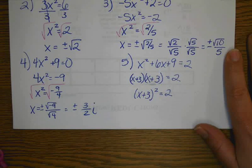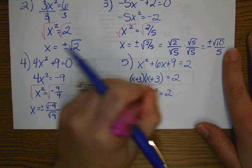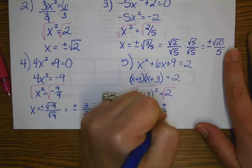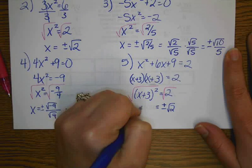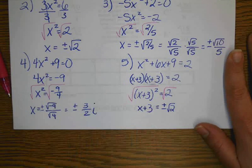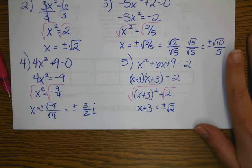And which is the quantity x plus 3 squared equals 2. Now you have something squared, so we can undo that. We have plus or minus square root of 2 over here equals x plus 3.